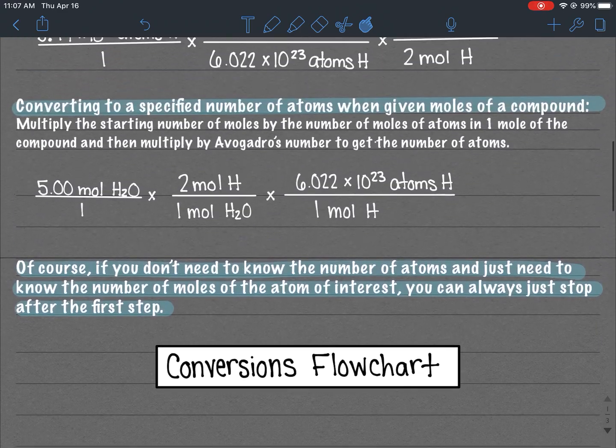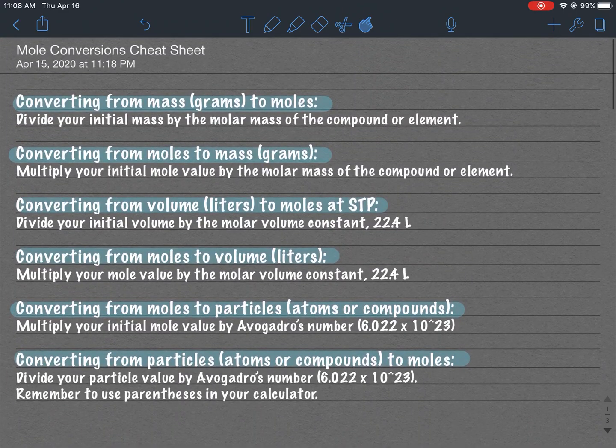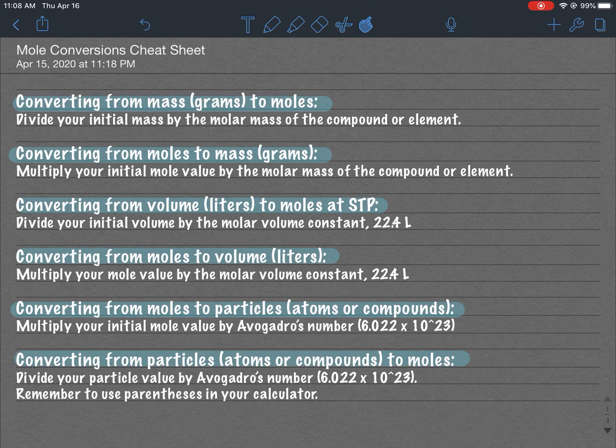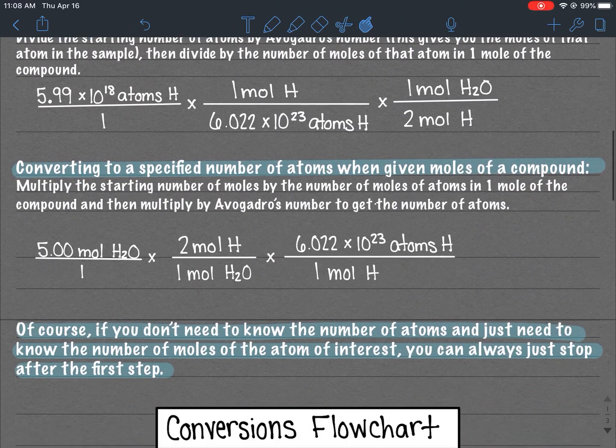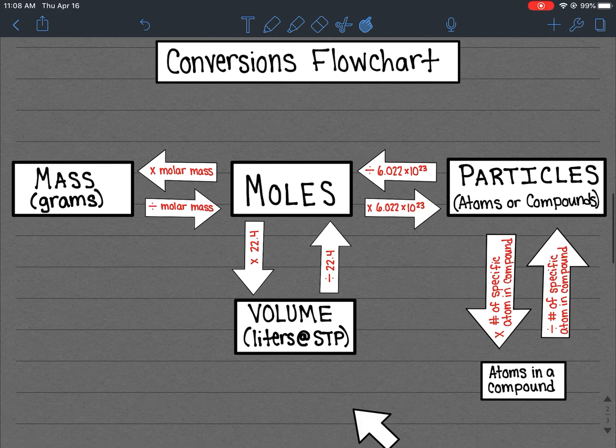On the top of this flowchart, I just gave you some cheat sheets. Like if you're converting from mass to moles or moles to mass, from volume to moles or moles to volume, it's just the typical step that you would take in order to do that. But it's like one step at a time. What I really like about the flowchart is that you can do multiple steps in a row.